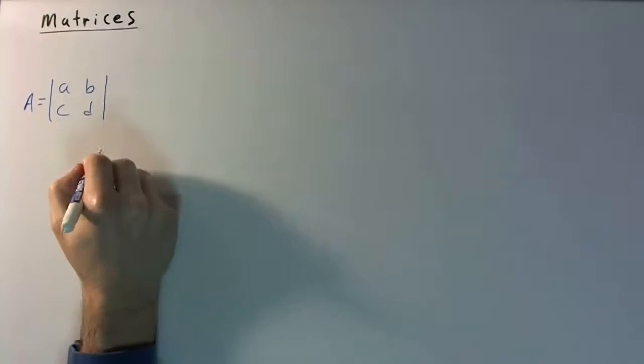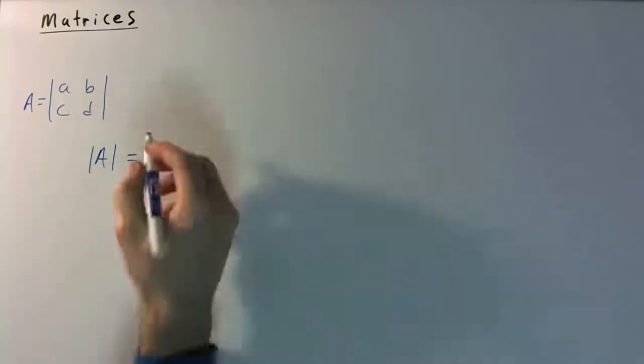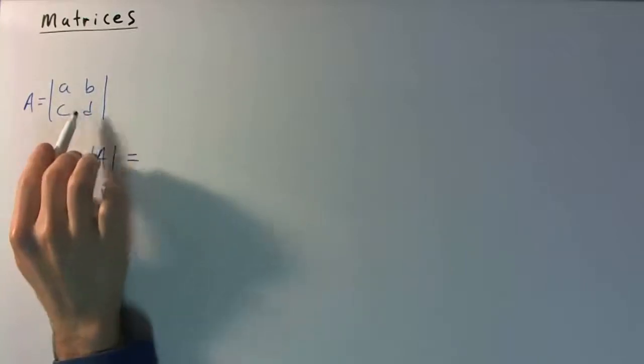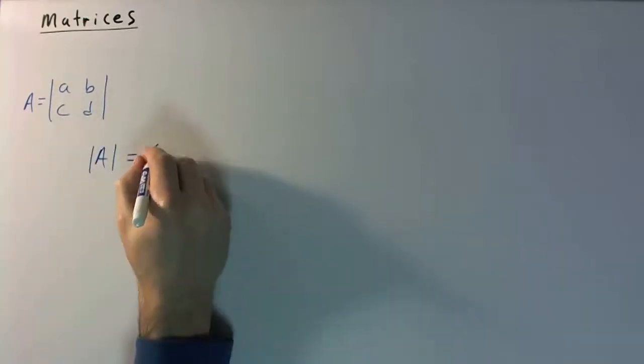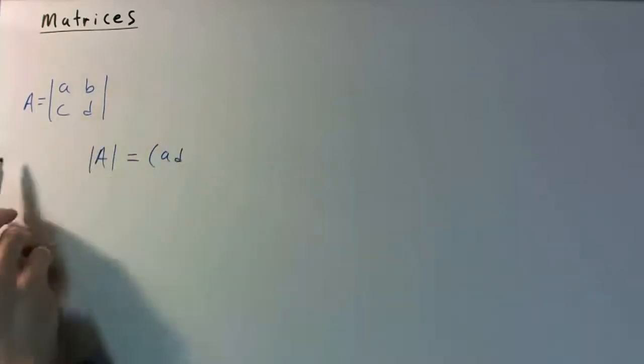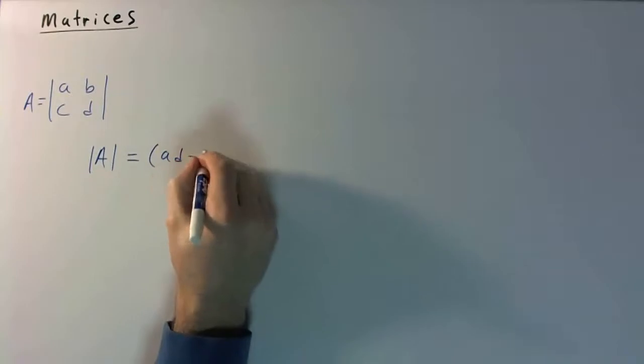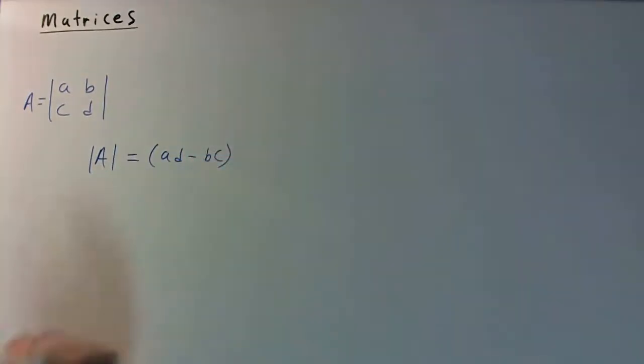So the determinant of matrix A is going to be equal to the top left times the bottom right. So we have A times D, and then we subtract that from the top right minus the bottom left minus B, C. So that would be your determinant of a 2 by 2 matrix.